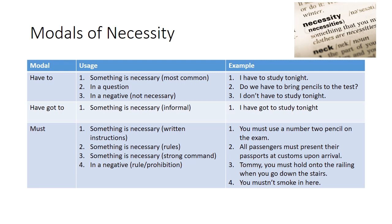When it's used in negatives it means that something is not necessary rather than it is necessary. We'll notice that when we use have to for something is necessary, that's the most common usage of it. So we could say I have to study tonight. Have to can also be used in a question. We don't use have as the helping verb. We actually have to bring in the helping verb do for both the question and for the negative. So the question is do we have to bring pencils to the test. In the negative it means something is not necessary, so we could say I don't have to study tonight meaning that it is not a requirement.